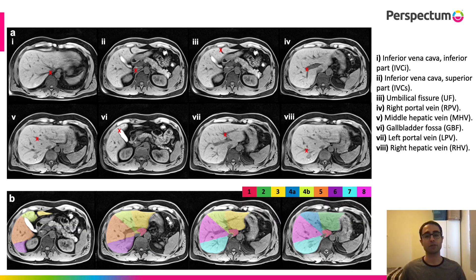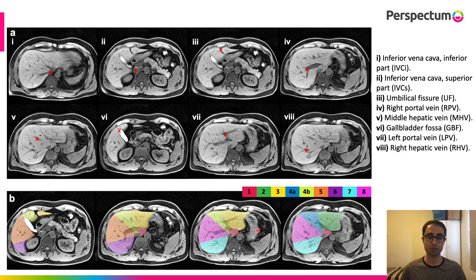Here's an illustration of the approach. We identify eight landmarks and use these to define the 3D planes that split the liver into regions. For example, to split the left median and the left lateral sections, you would use the inferior vena cava inferior part, the superior part, and the umbilical fissure — these three points define the plane. It should be noted that we couldn't identify a good way to split region one, the small red region, using a simple plane, so our method is only used for segments two to eight.